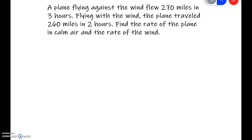Let's read the problem. A plane flying against the wind flew 270 miles in three hours. Flying with the wind, the plane traveled 260 miles in two hours. The question is: find the rate of the plane in calm air — that means no wind — and the rate of the wind.